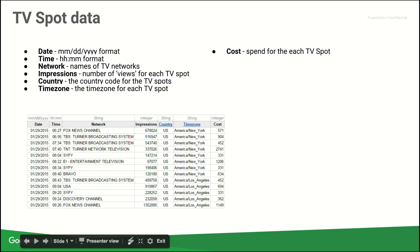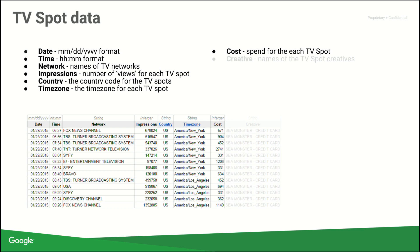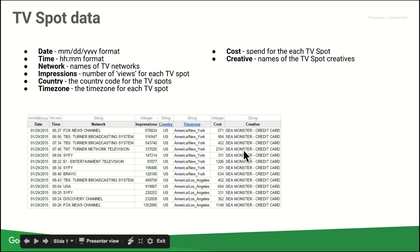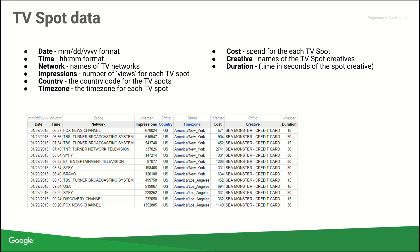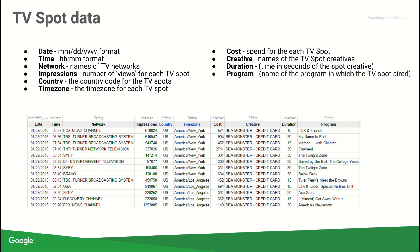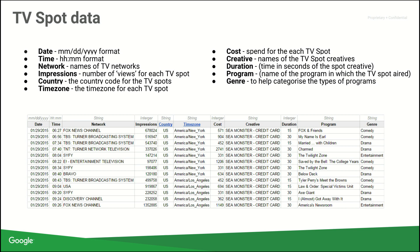Next up, we have cost — make sure it's a number, no symbols, no commas. Then creative, which is once again a string: symbols, letters, numbers. Duration is just a number — an integer in this case. Programs and genre are also strings. And we'll round off with currency, which follows a certain naming convention outlined in the Help Center article.